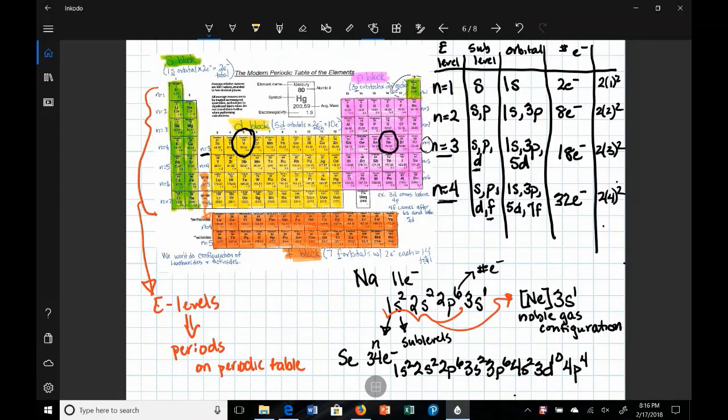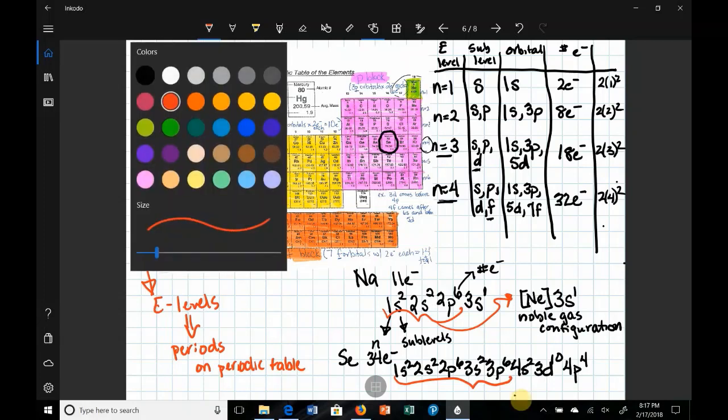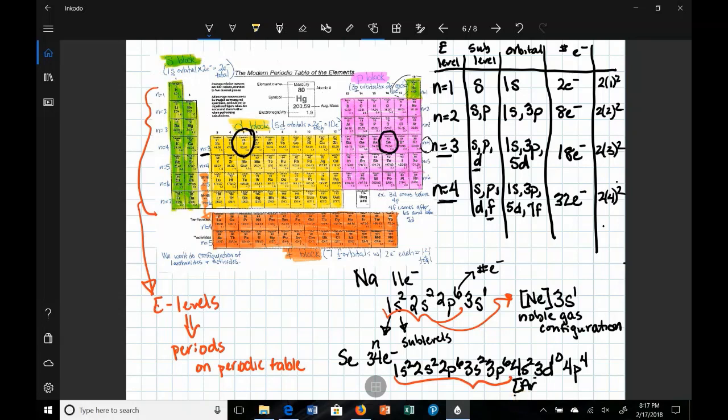Let's take a look at selenium. Selenium, the previous noble gas here is argon. Argon has 18 electrons, so we can count out the first 18 electrons. And that is 2, 4, 10. And we have these guys here. So notice that these first 18 electrons represent argon. Notice we're left with the remaining electrons for the remaining electron configuration. So we can write it as argon, 4s2, 3d10, 4p4.